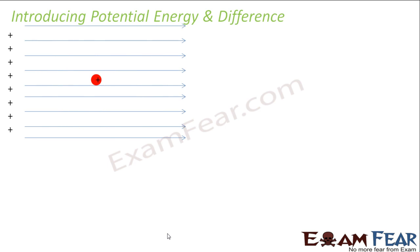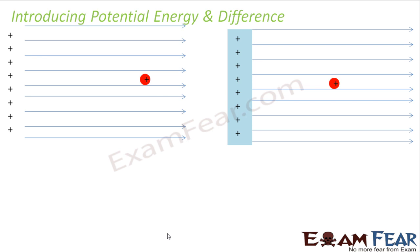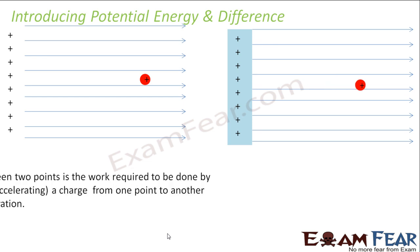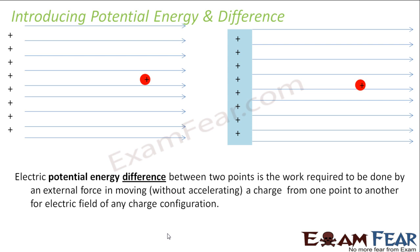We take the same scenario of a positive charge in the electric field produced by a positively charged conductor. Let us first define potential energy difference, because potential energy difference is the one which is directly related to work. So let us try to define potential energy difference with respect to whatever we have studied so far.